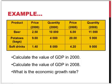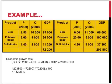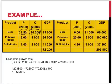The first step is to calculate the value of GDP in 2000, then do it for 2008, and from that we can calculate the economic growth rate. Calculating the values of the GDP is simple — you multiply the price with the quantity, and that gives you a GDP value. In the case of beer in the year 2000, at a price of 2.50, 10,000 units of beer are produced, giving a GDP value for beer of 25,000. Adding the others gives a GDP total value of 72,200. Similar calculations for 2008 yield a GDP value of 203,800.